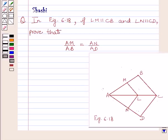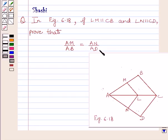Hi and welcome to the session. Let us discuss the following question. In figure 6.18, if LM is parallel to CB and LN is parallel to CD, prove that AM upon AB is equal to AN upon AD. This is figure 6.18.